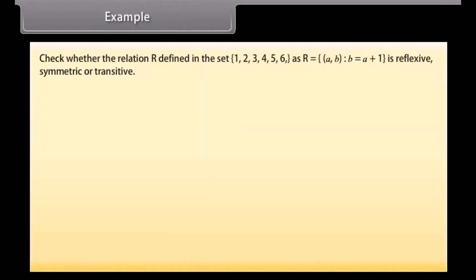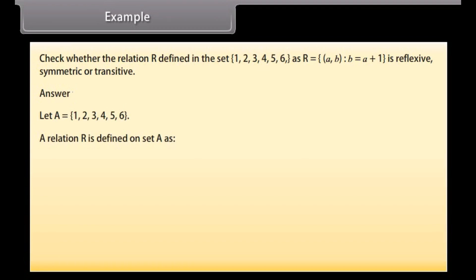Example: Check whether the relation R defined in the set {1, 2, 3, 4, 5, 6} as R = {(a, b) such that b = a + 1} is reflexive, symmetric, or transitive. Answer: Let A = {1, 2, 3, 4, 5, 6}. A relation R is defined on the set A as R = {(a, b) such that b = a + 1}. Therefore, R = {(1,2), (2,3), (3,4), (4,5), (5,6)}.